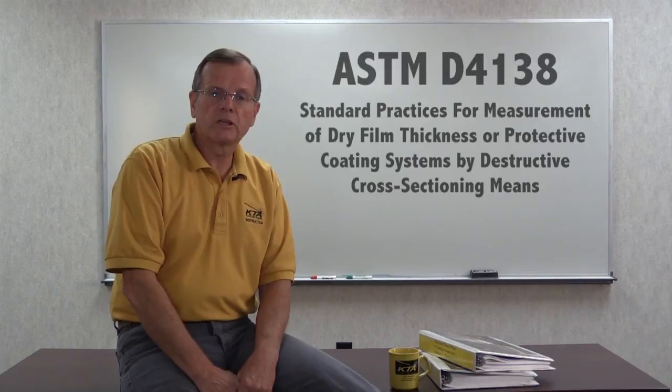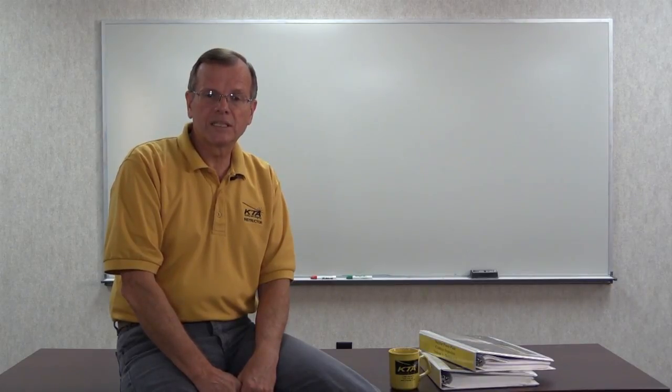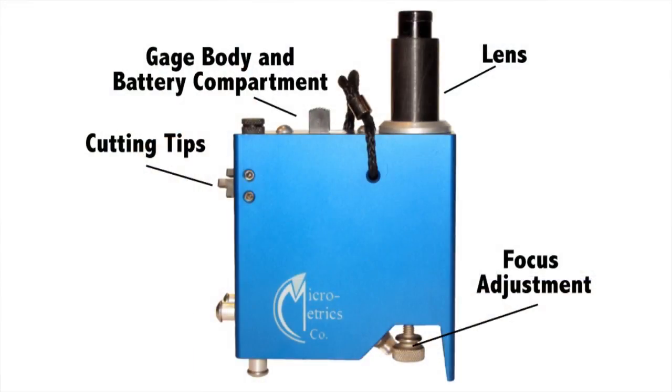The Tooke Gauge was originally invented in the early 60s by a man named Raymond Tooke of Micrometrics. It consists of a gauge body and battery compartment, 50 power microscope, and a scale etched into the lens, and a focus adjustment for it.